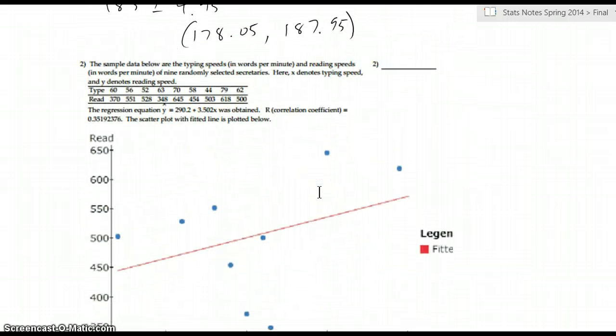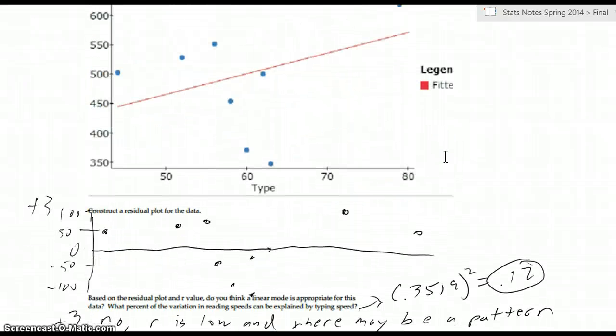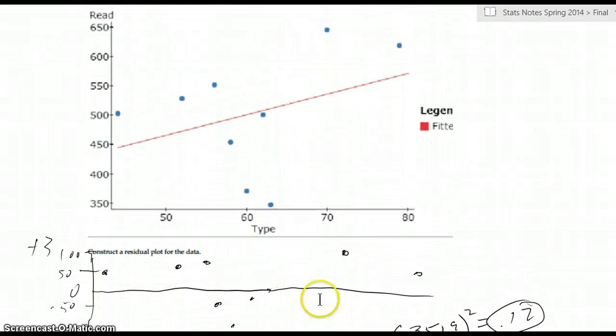Number 2 is a linear regression. They give you the data. They give you the regression equation. They give you R right here. They give you a scatterplot. So what do we do from here? Well, we have to make a residual plot. So make a horizontal line here where zero is kind of nominal. This is right on the line. And these are how the dots are in relation. So the residual is how far off the line they are.